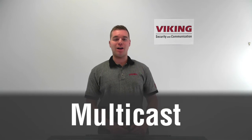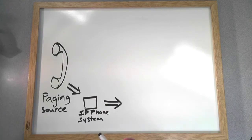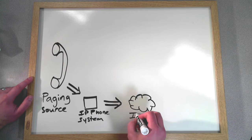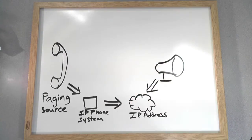Now onto multicast. Multicast paging makes a lot of sense when you think about it like a TV or radio broadcast, where a signal is sent to a transmitter and then individual TVs or radios tune in to that broadcast via a channel or wavelength. In multicast paging applications, your audio is sent to an IP address, and then endpoint devices and zones are tuned into that IP address.